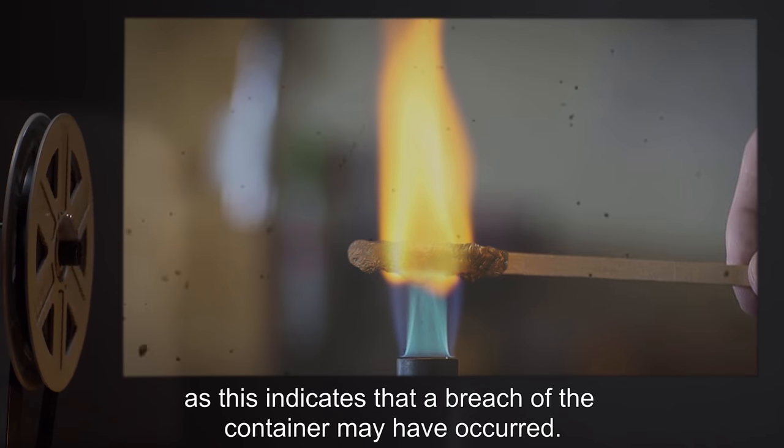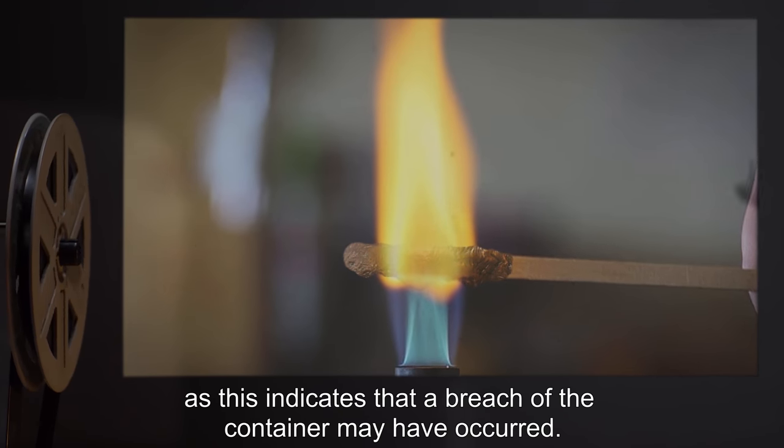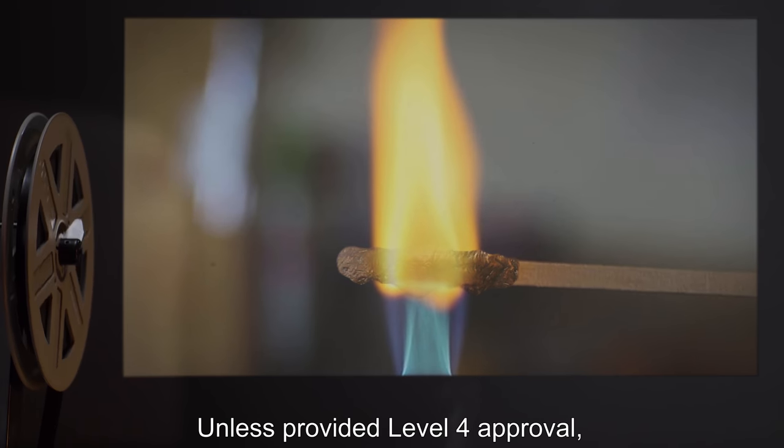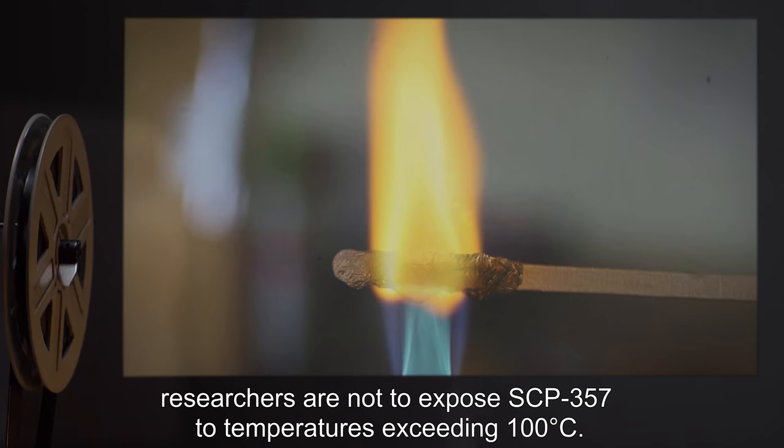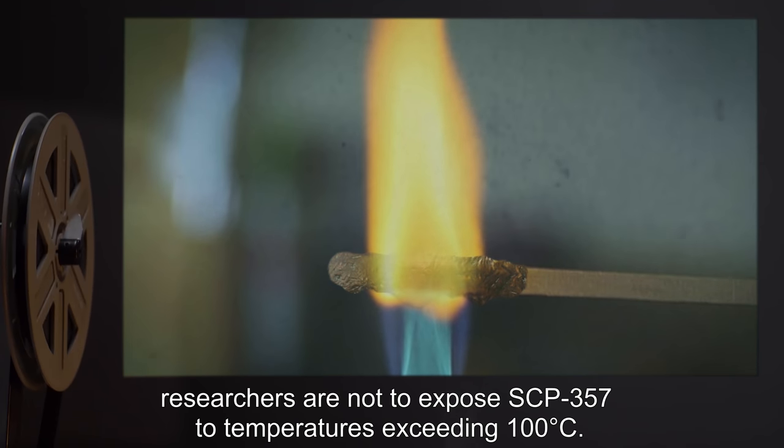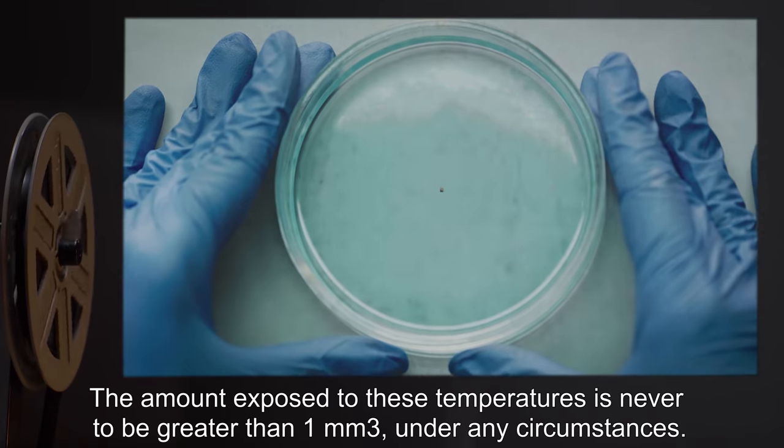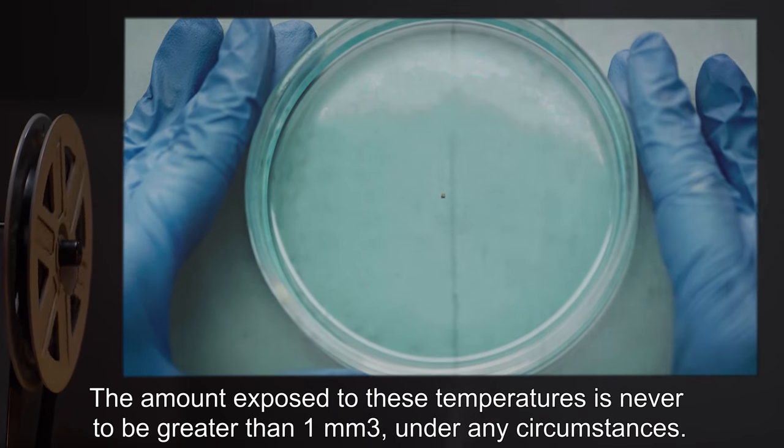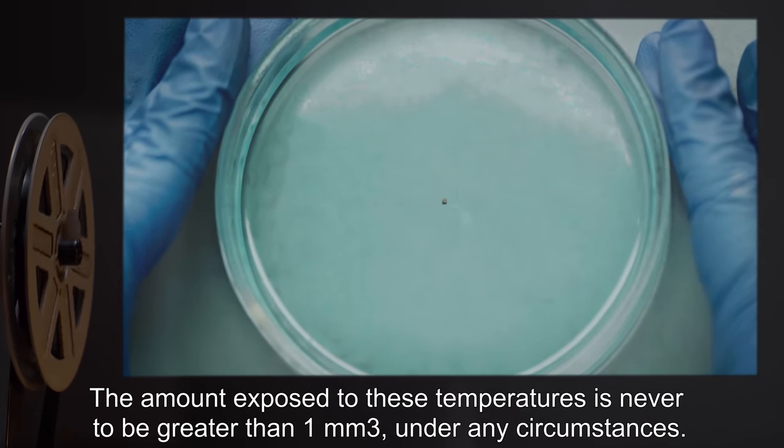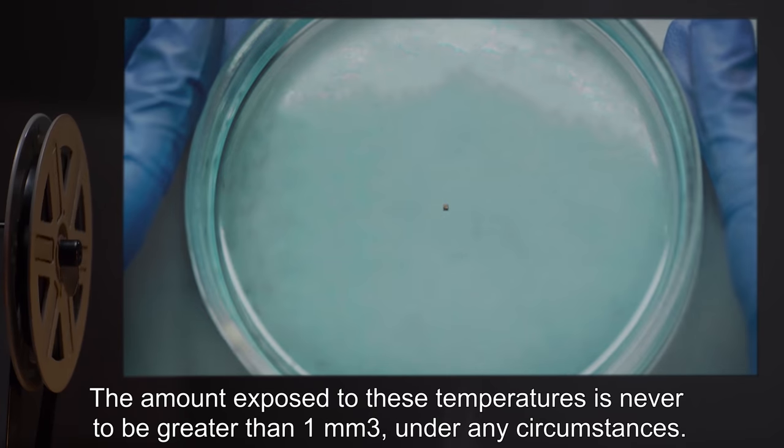Unless provided Level 4 approval, researchers are not to expose SCP-357 to temperatures exceeding 100 degrees Celsius. The amount exposed to these temperatures is never to be greater than 1 cubic millimeter under any circumstances.